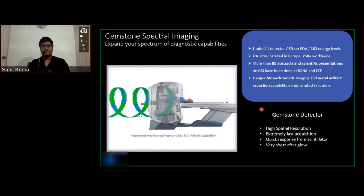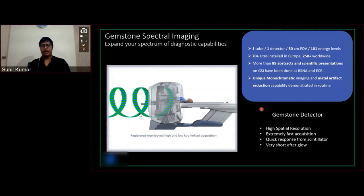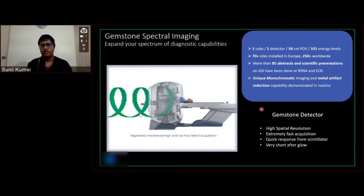The detector is extremely fast in acquisition. Since we use 80 and 140 kV as fast kV switching, the detector must be capable of acquiring it in a very fast amount of time. The scintillation is very quick, and to do that we have very short afterglow — essentially zero afterglow — in the detector. We do have 70-plus sites across the world. We have a lot of publications and approved clinical data.